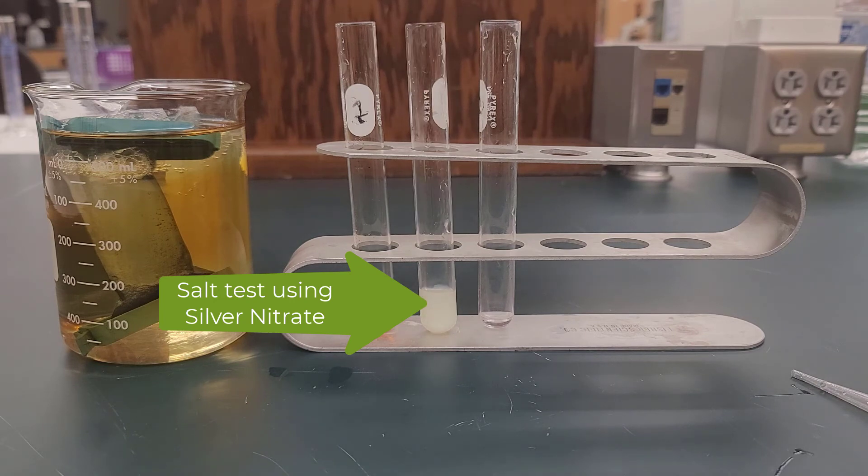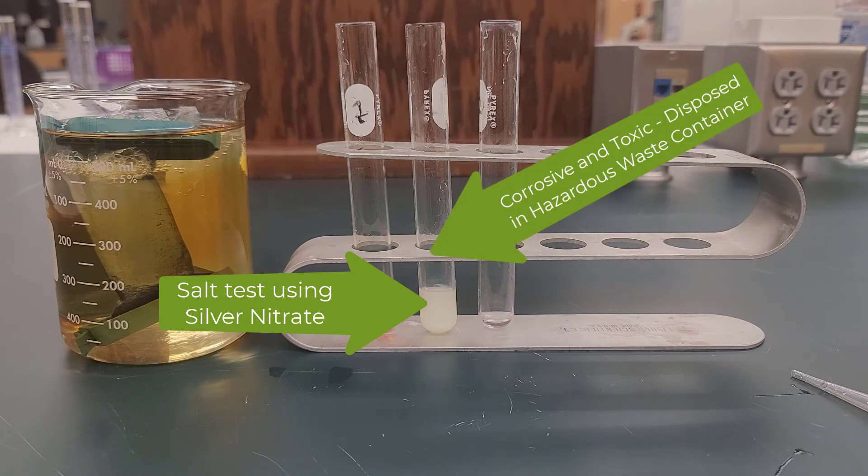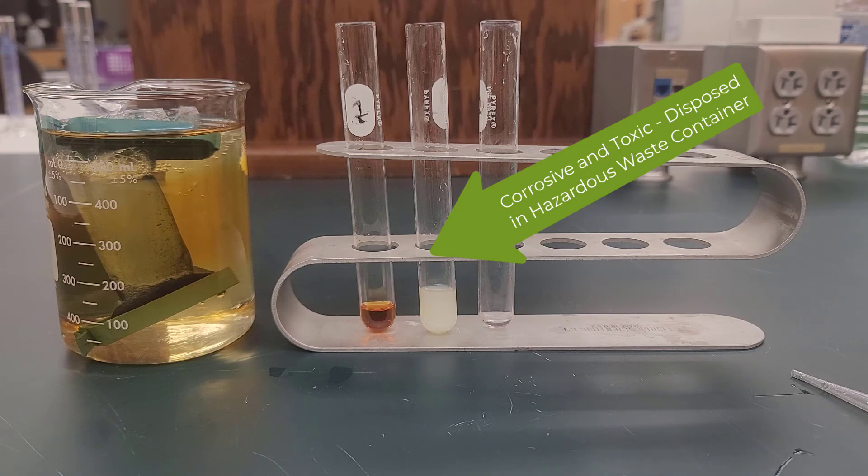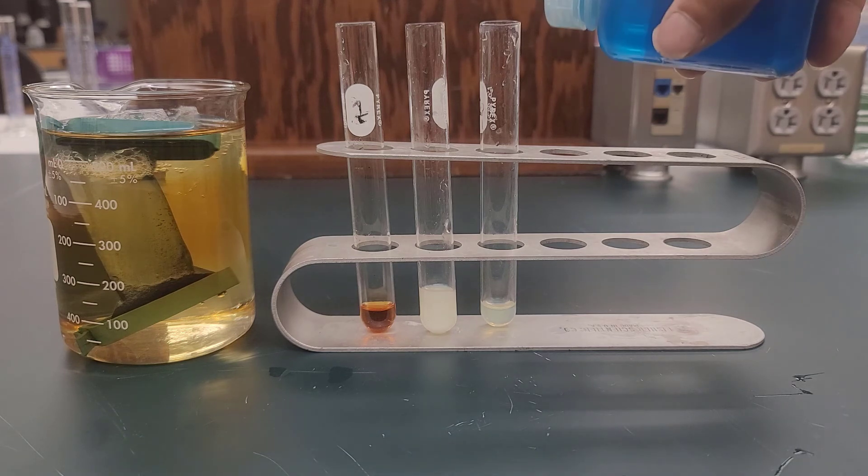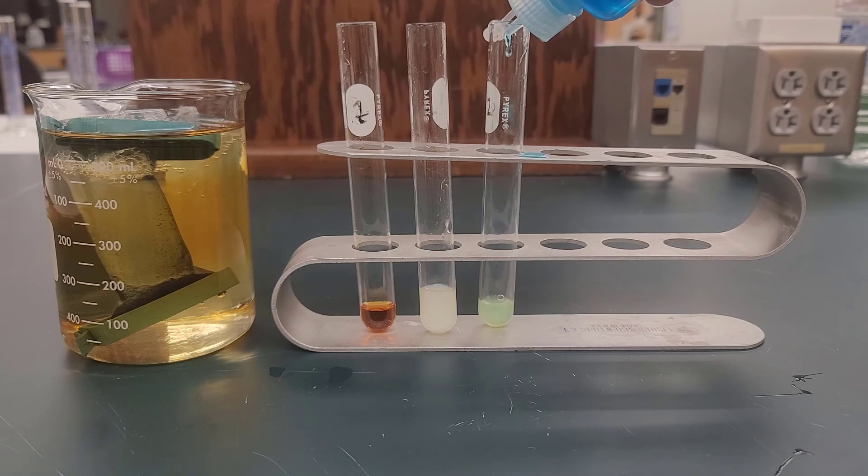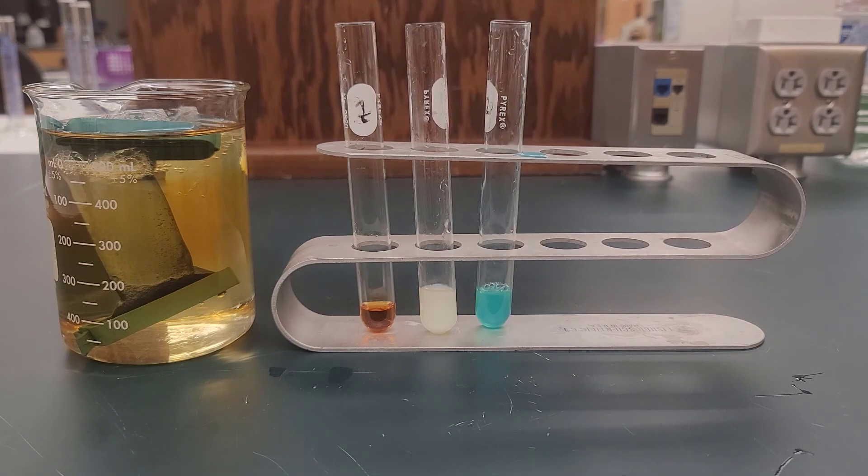Silver nitrate is toxic and corrosive so it requires special disposal - we put it in a hazardous waste container, whereas the other materials simply go down the drain typically. Our last test is for glucose, so once again we take a sample and this time we use Benedict solution to test for glucose.